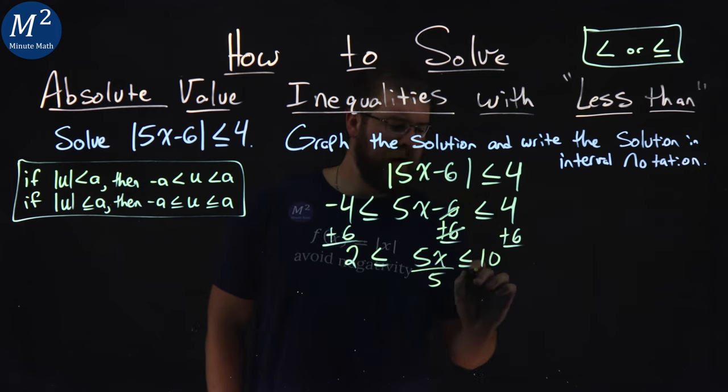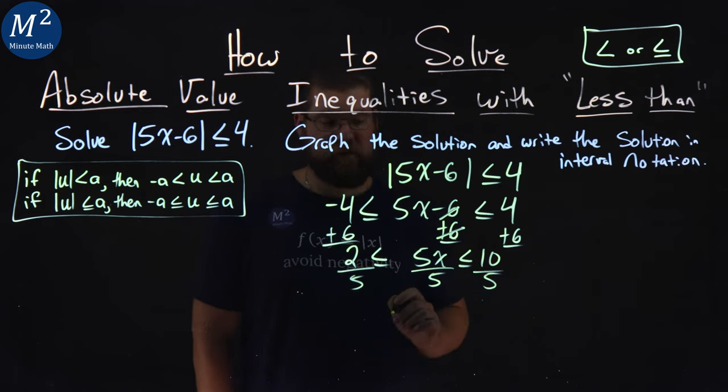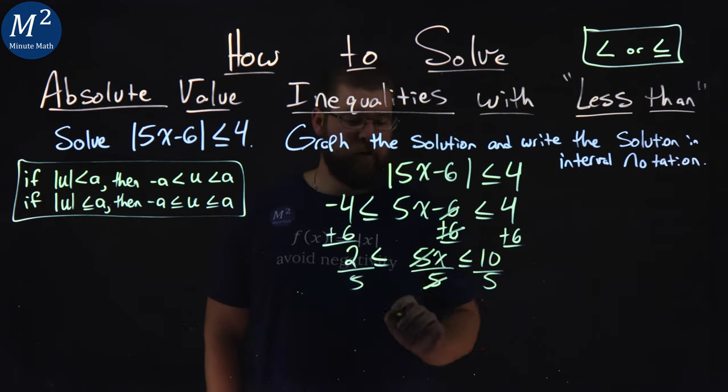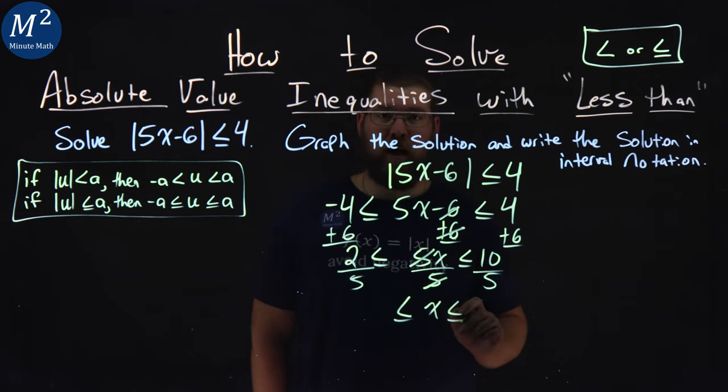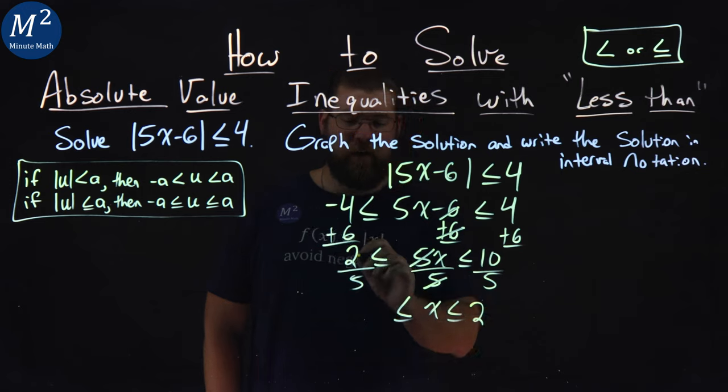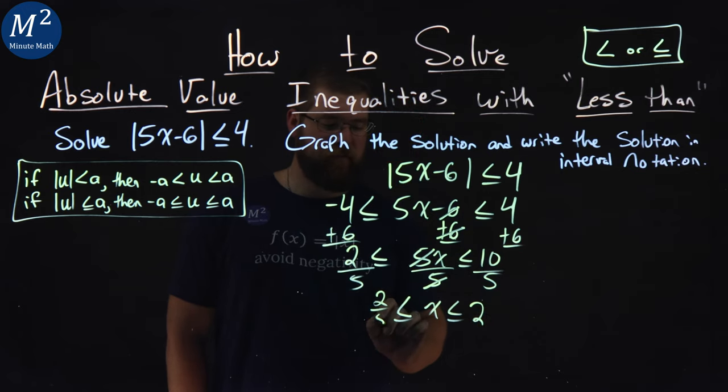Divide both sides by 5—or three sides by 5, actually. The 5s cancel in the middle. We have 2 fifths less than or equal to x, which is less than or equal to 10 over 5, which is 2.